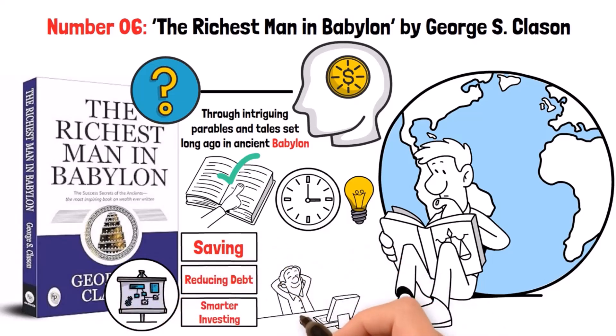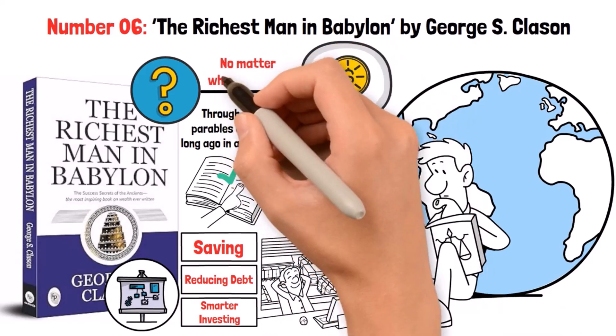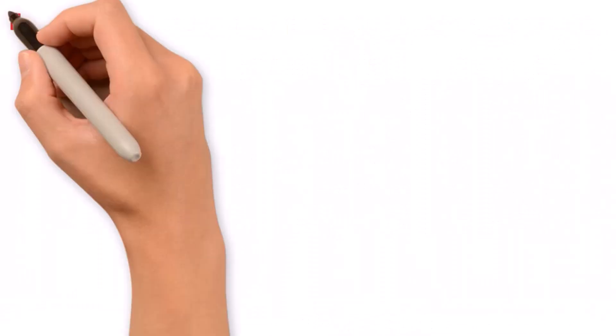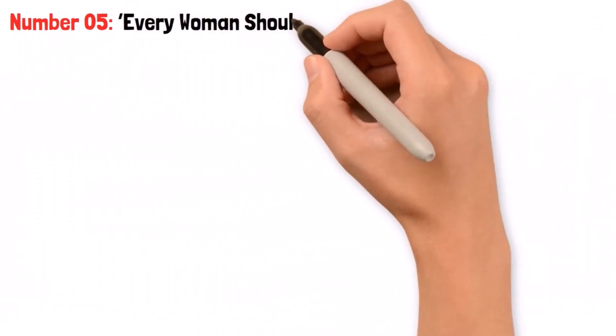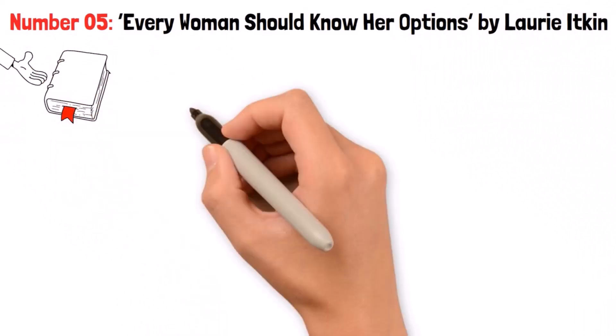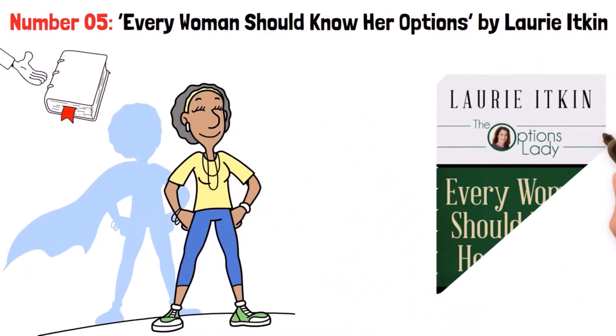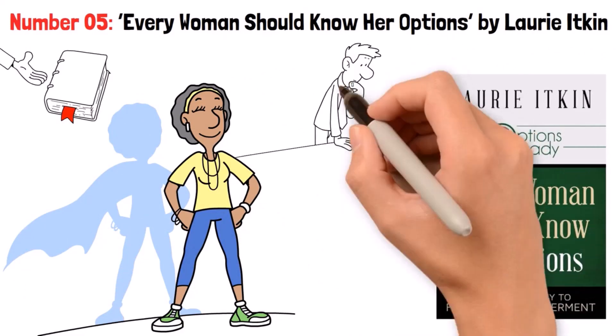Number 5: Every Woman Should Know Her Options by Laurie Itkin. Up next is a book that promises to enlighten and empower all women on their financial journey. This is a compelling read filled with invaluable advice and real motivation.